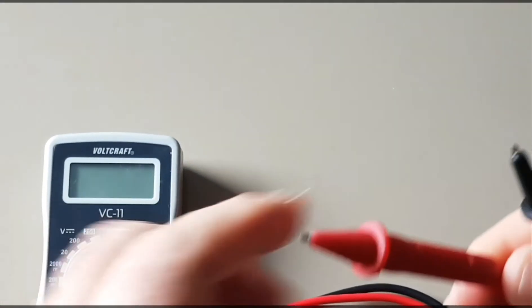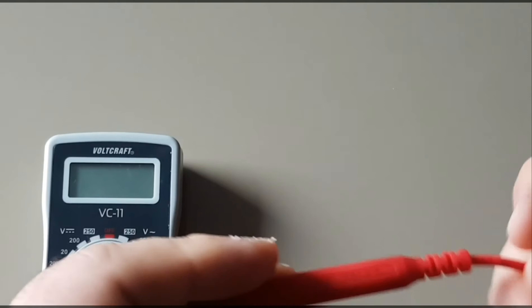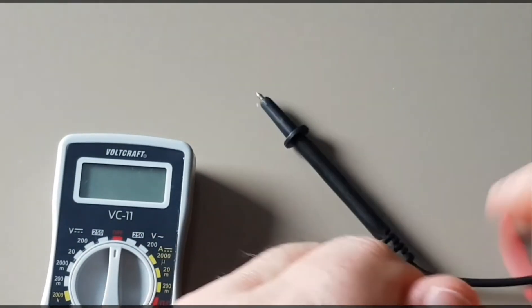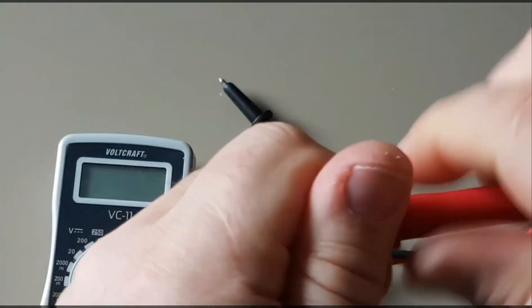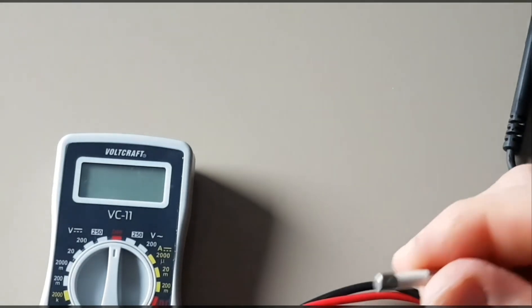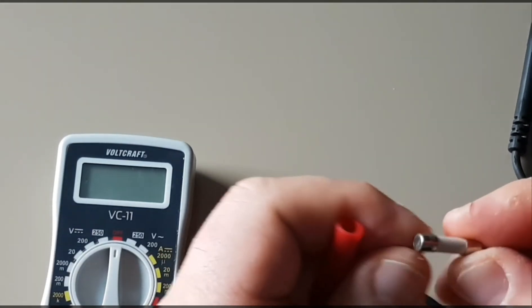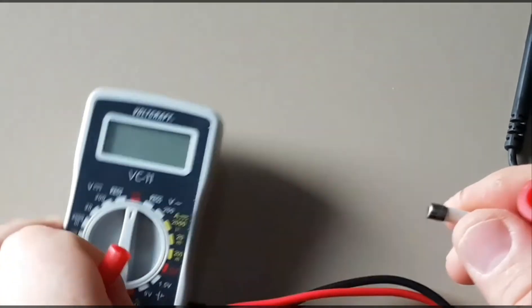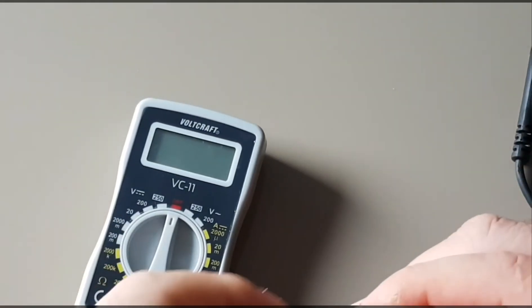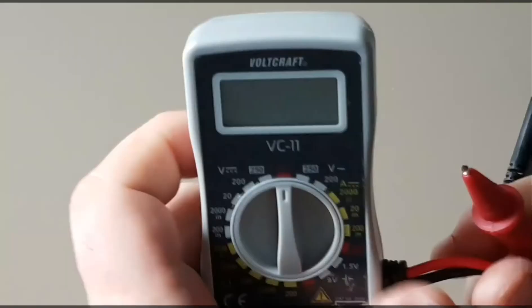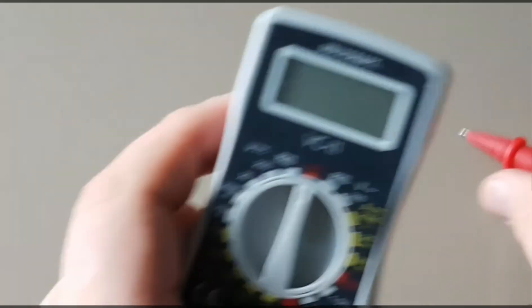Now the one thing that's neat about this multimeter is the fact that the fuse is actually built into the probe. So if we just unscrew the probe, there's the fuse. That's a handy dandy feature. It saves you having to actually open up the meter to replace the fuse if you do happen to blow it. So because of the size, I think that's really neat.